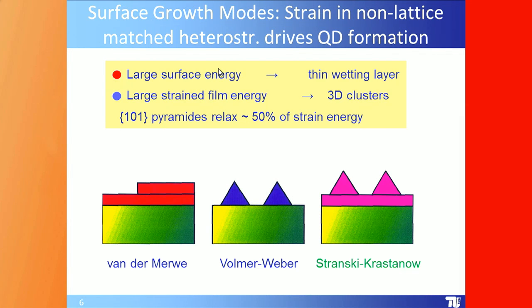The solution came from surface physics. When you grow layers of different chemical composition on top of each other that are not lattice-matched, strain in these non-lattice-matched heterostructures drives what we now call quantum dot formation. Originally we knew about two types of growth modes.